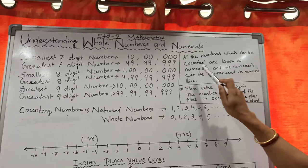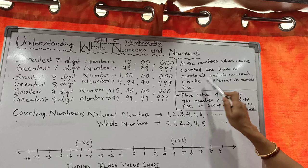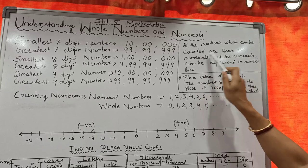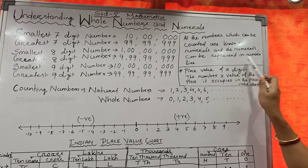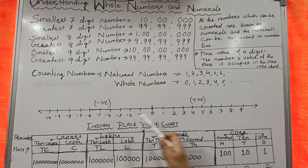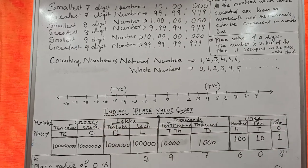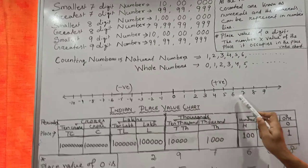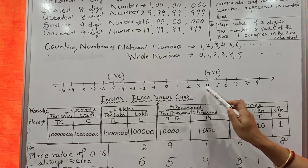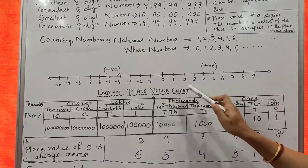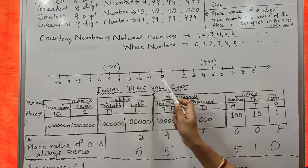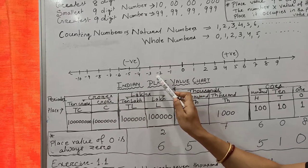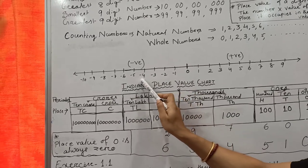All numbers which can be counted are known as Numerals. Numerals are numbers which can be counted and they can be represented on a number line. Let us take one number line. This line is called a number line. This point is 0. On the right hand side, all numbers are called positive numbers: 1, 2, 3, 4, 5, 6, 7, 8, and so on. And on the left side of 0 are called negative numbers: minus 1, minus 2, minus 3, minus 4, and so on.